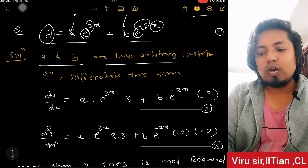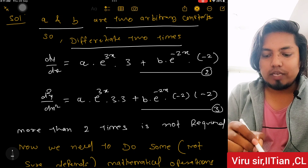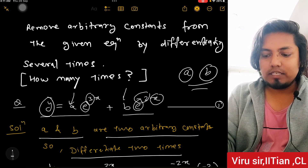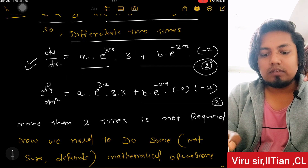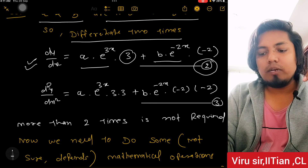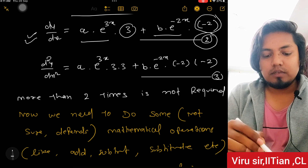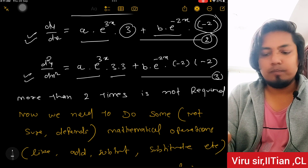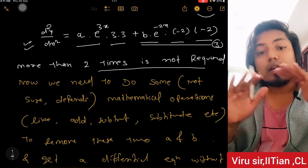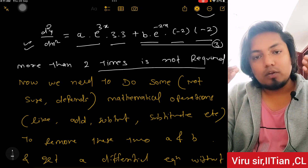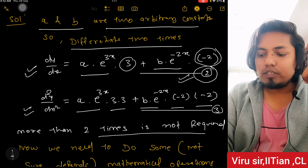Since A and B are two arbitrary constants, we differentiate two times. The main equation is equation 1: y = Ae^(3x) + Be^(-2x). Differentiating: dy/dx = 3Ae^(3x) - 2Be^(-2x) — this is equation 2. Differentiating again: d²y/dx² = 9Ae^(3x) + 4Be^(-2x) — this is equation 3. More than two times is not required since there are only two constants.